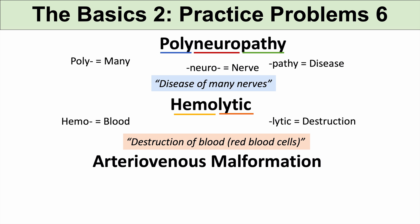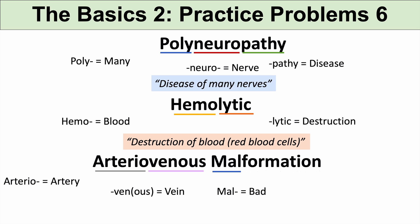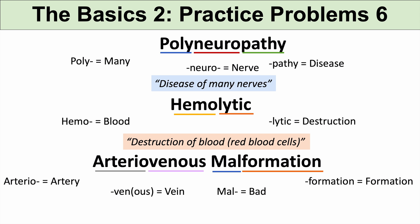Another practice problem is arteriovenous malformation. Arterio refers to arteries, and venous refers to veins. The prefix mal means bad, and formation means formation. So it's a bad formation — a malformation — of arteries and veins. That is what arteriovenous malformation is on a basic level.